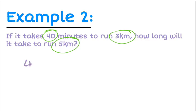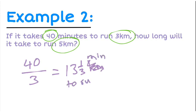If it's 40 minutes divided by 3 kilometers, that gives us 13 and 1/3. That's how many minutes it would take to run 1 kilometer.